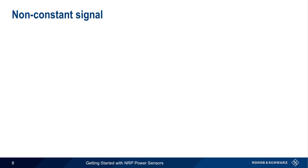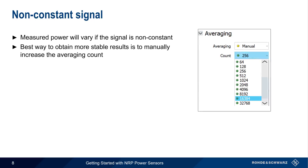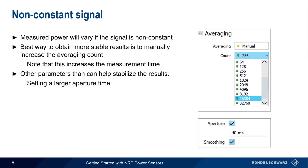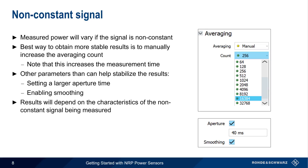If we have a non-constant signal, the displayed power will fluctuate over time. The best way to deal with this is to manually increase the average count, which should lead to more consistent measurement results but will also increase the measurement time, sometimes dramatically. Other ways of stabilizing the measurement results include manually increasing the aperture time and/or enabling smoothing. How much of an effect these have will, of course, depend on the nature of the non-constant signal being measured.